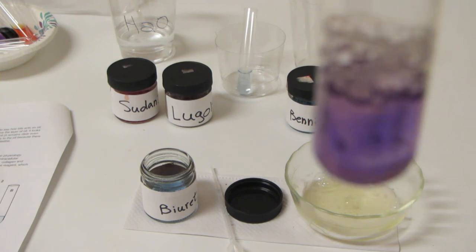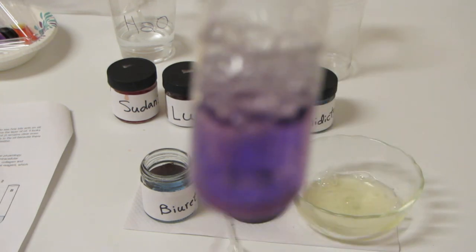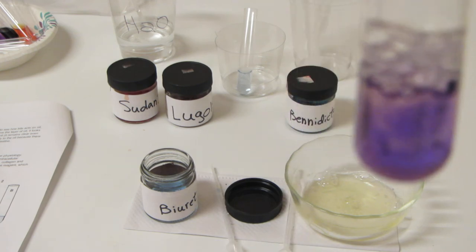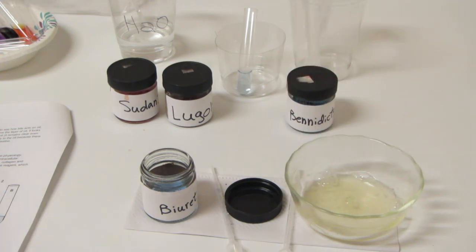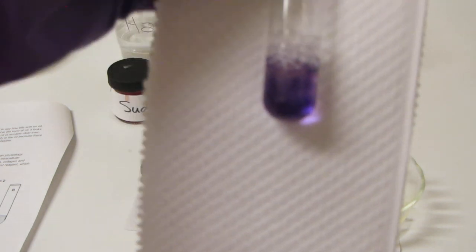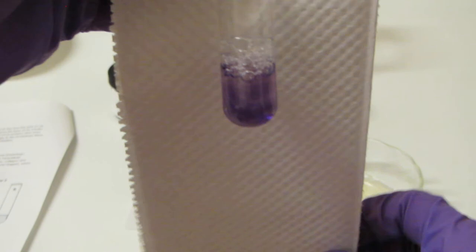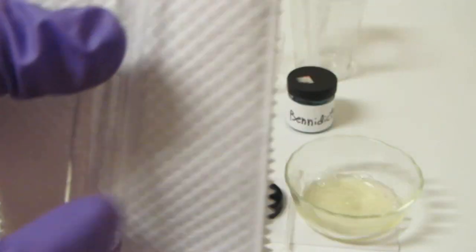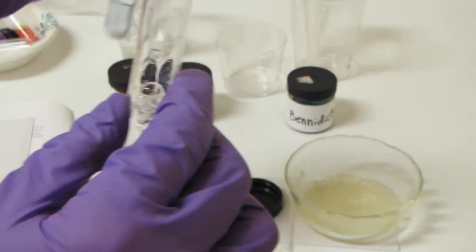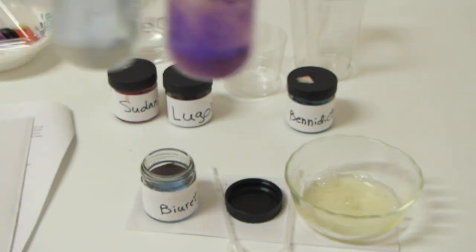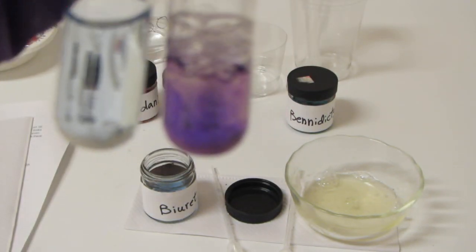And look what's going on here. Our Biuret solution has changed from that light blue to this beautiful lavender purple. In fact, I'm going to put that up against the white background for you. And you can see that we've got this beautiful shade of purple. In fact, it's getting close to the color of the purple gloves that I'm wearing. And if I go ahead and grab the tube that has the Biuret mixed with water, now you can see the color difference here.